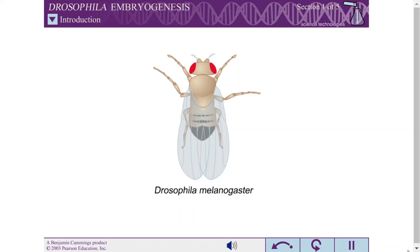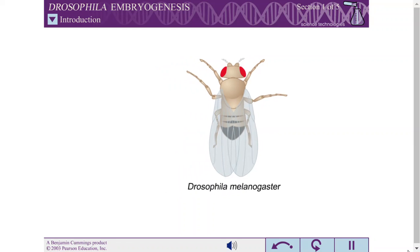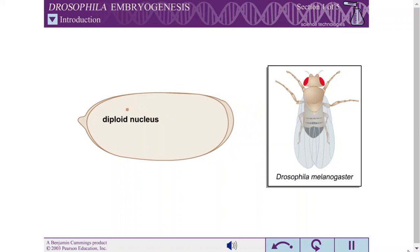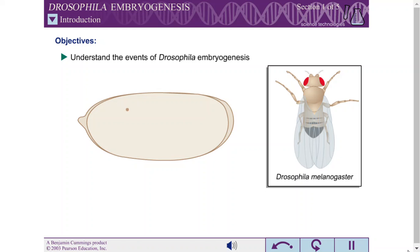The fruit fly Drosophila melanogaster has been studied extensively as a relatively simple model for cell differentiation in animals. During fertilization, a single sperm cell enters a mature egg and the haploid sperm and egg nuclei fuse to form a diploid nucleus. Only a few hours after fertilization, the cells of a developing fruit fly embryo become irreversibly determined to differentiate into specific tissues in the adult fly. After completing this exercise, you should understand the events of Drosophila embryogenesis and how the position of each nucleus determines its fate.